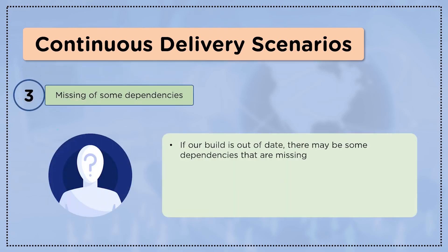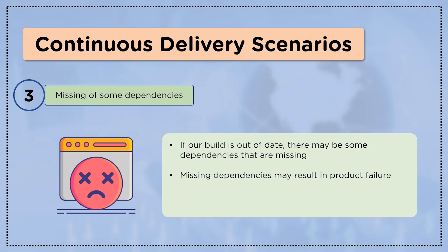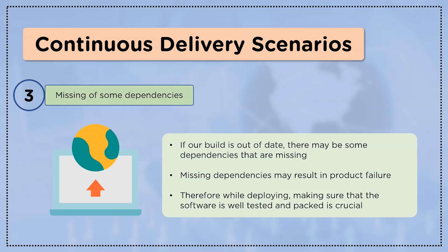Monitoring the product after delivery is an essential process of development, and bug fixing and product maintenance require the right amount of monitoring logs. The third and last scenario in this continuous delivery section is the missing of some dependencies. There might be cases when a build is out of date and some dependencies are missing, which can lead to product failure. This may be costlier since maintenance is the more significant part of the development life cycle. While deploying, it is important to make sure the software is well tested and packed.